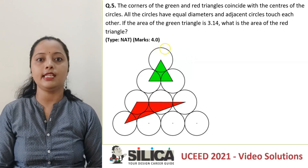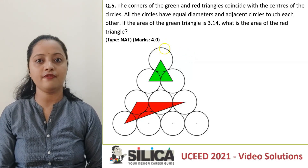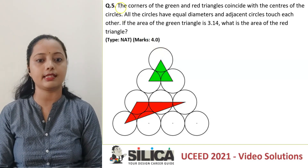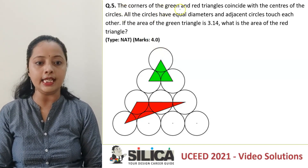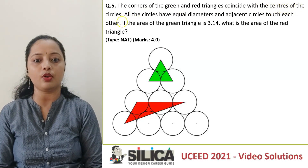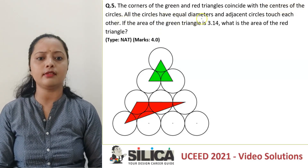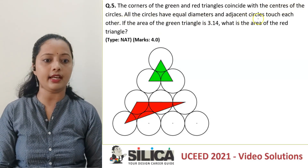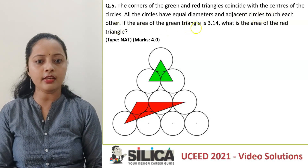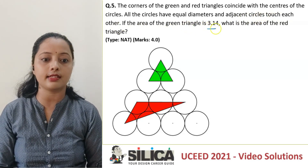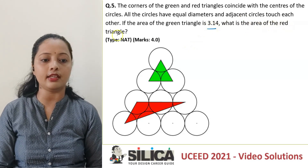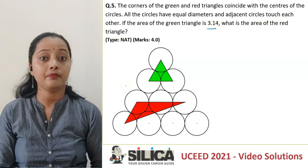Hello everyone, we will now see a question from the UC 2021 paper. The question says: the corners of the green and red triangles coincide with the centers of the circles. All the circles have equal diameters and adjacent circles touch each other. If the area of the green triangle is 3.14, what is the area of the red triangle?